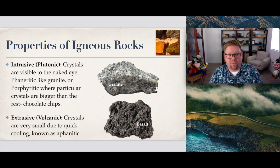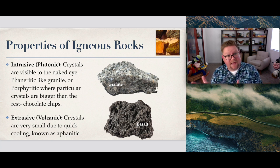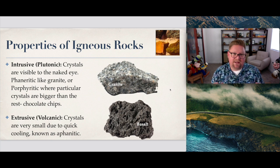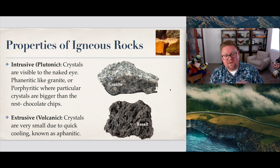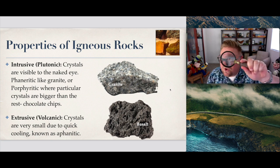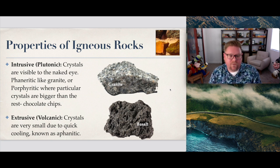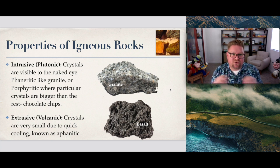We have intrusive rocks, also known as plutonic, and extrusive rocks, also known as volcanic. In intrusive rocks, crystals are visible to the naked eye. Terms that describe grain size include phaneritic — like granite, as seen in the photo — and porphyritic, where crystals can be even larger than a chocolate chip. You've probably seen granite as a countertop; looking at it, you can see the different colored crystals. There are also terms like aphanitic and phaneritic that describe grain size.